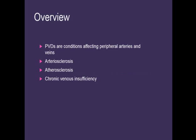We have arteriosclerosis, which is a thickening of the blood vessels. The arterial walls have a decreased elasticity and a hardening of the arterial walls — so thickening, decreased elasticity, and hardening of the arterial walls.